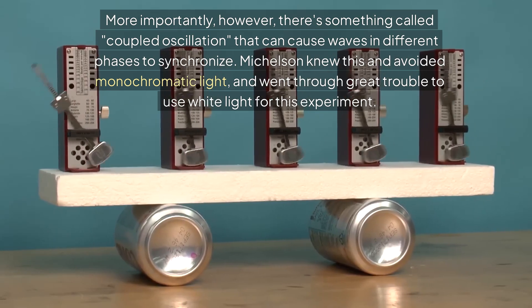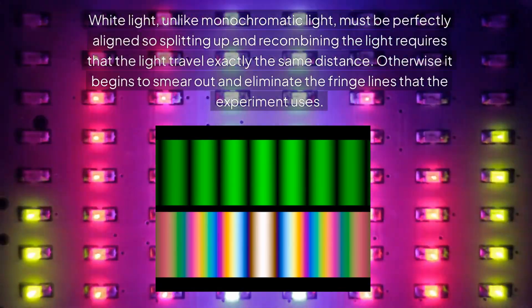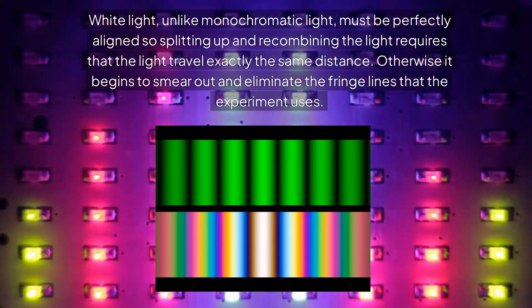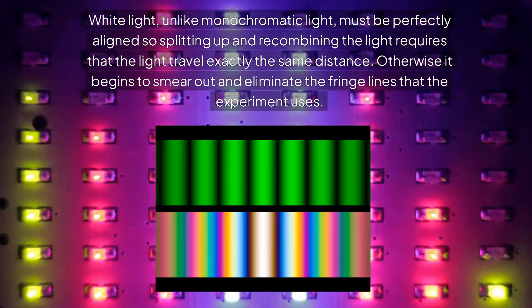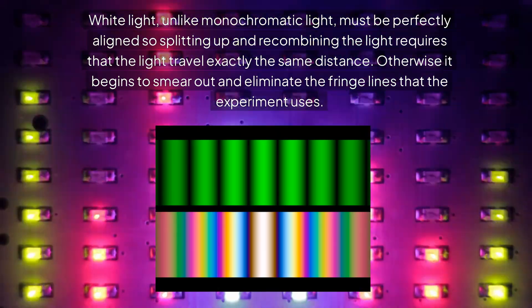Michelson knew this and avoided monochromatic light and went through great trouble to use white light for this experiment. White light, unlike monochromatic light, must be perfectly aligned, so splitting up and recombining the light requires that the light travel exactly the same distance.